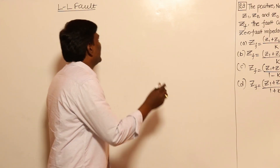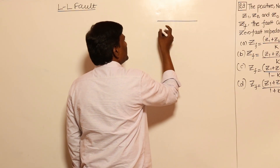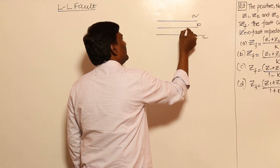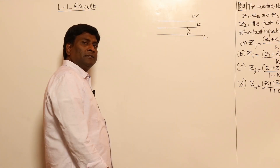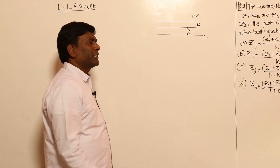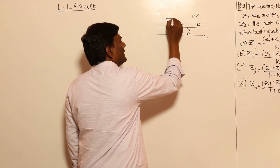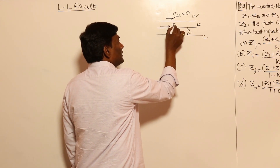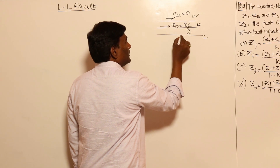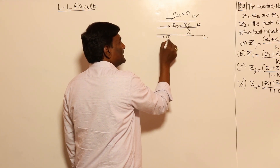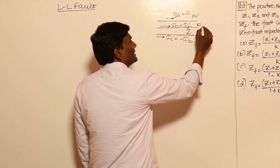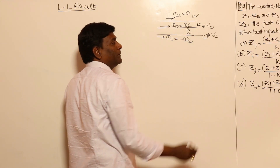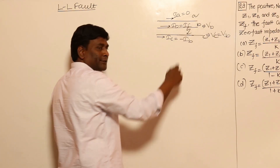Let us think of a line-to-line (LL) fault. For example, if I have phase A, B, C — and fault occurs between phases B and C. Let us think of fault impedance of zero at starting; later we can include fault impedance. Now, IA is going to be zero (unloaded). IB is nothing but the fault current, and IC is going to be minus IB. VB is equal to VC because they are shorted.